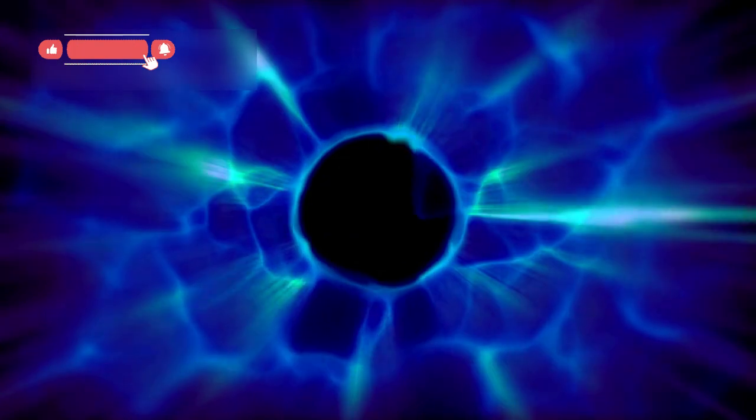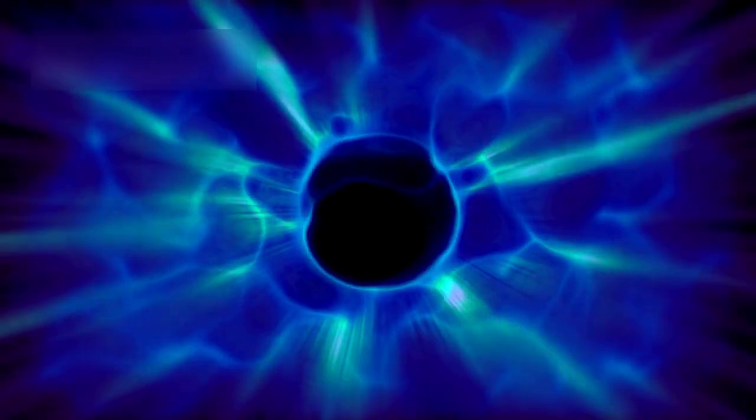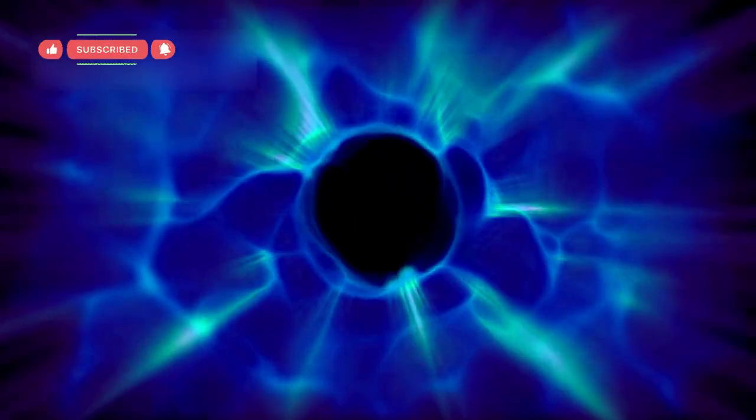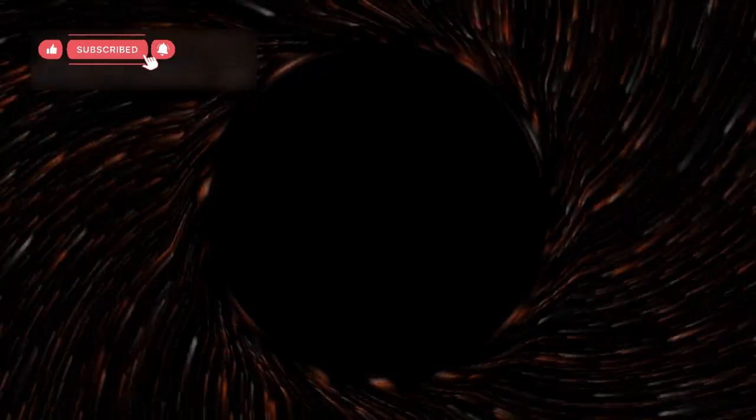Another possibility is that the black hole is interacting with a filament of the cosmic web, a structure composed mostly of dark matter that acts like scaffolding for galaxies. If the black hole is moving along one of these filaments, it could be triggering star formation as it passes through pockets of dense material.